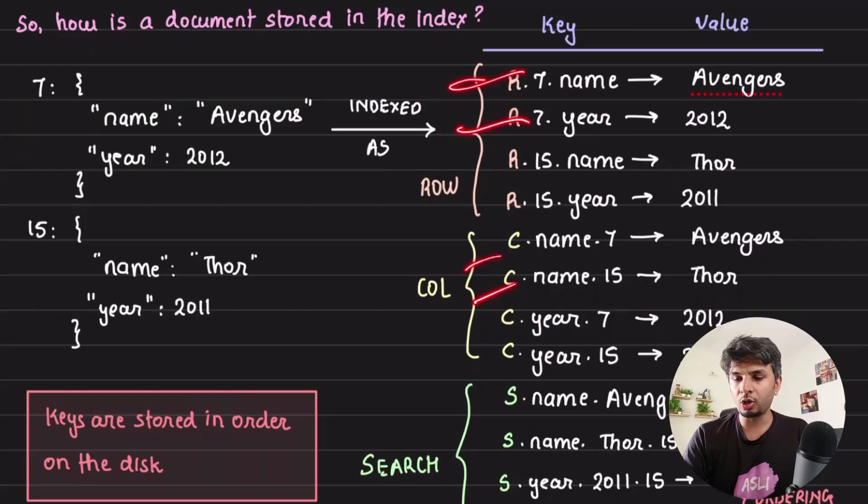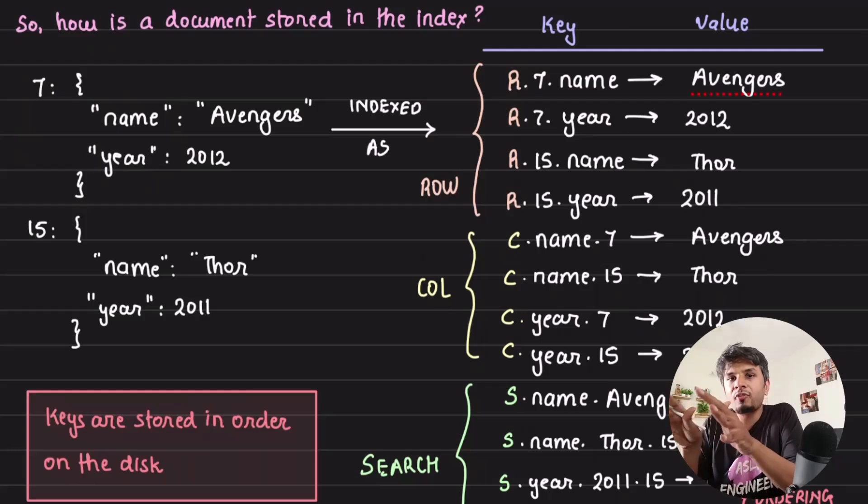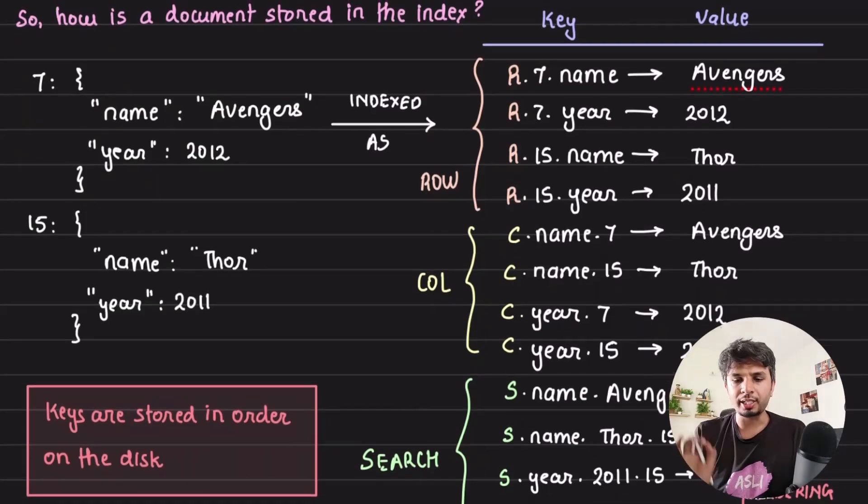Two for rows, two for columns, two for search, because it has two attributes. So there is a high degree of fanout that is happening. Now understand the importance of this. If you look closely, the keys are always stored in order in RocksDB because that's how string table files are stored, always in order.